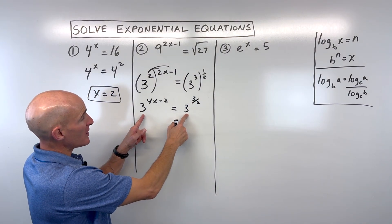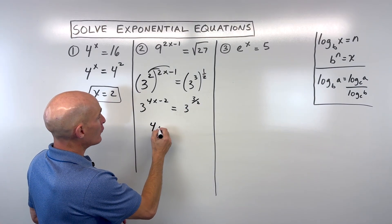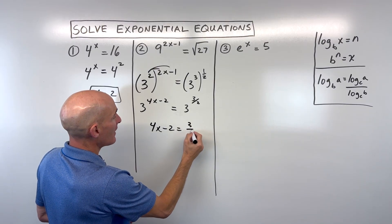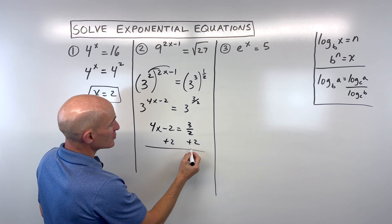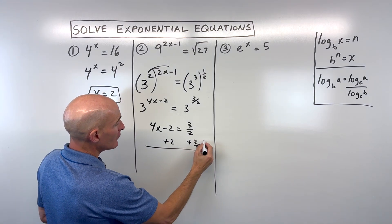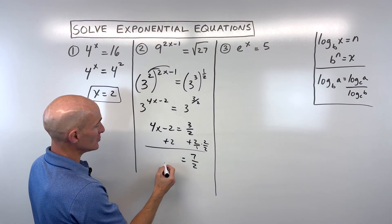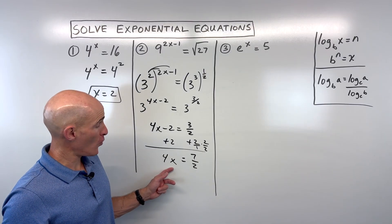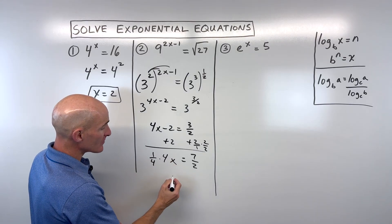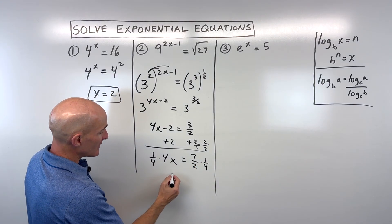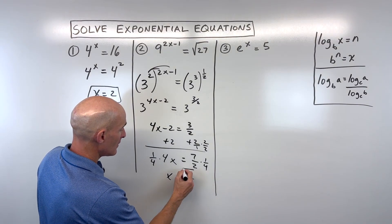Now we've got the same base — both base 3. We can set those exponents equal to each other and solve: 4x minus 2 equals 3/2. Adding 2 to both sides, 2 is like 2 over 1, gives us 4/2 plus 3/2, which equals 7/2. Then multiplying by 1/4, we get x equals 7/8.